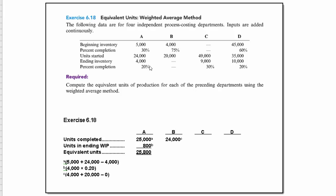That's the percent completed in ending. That's the percent completed in beginning. They give us that information for all four independent process costing departments.